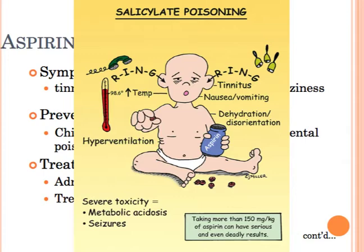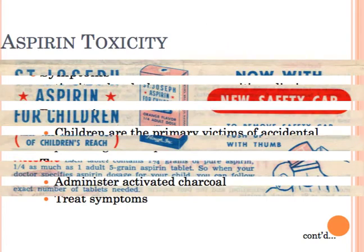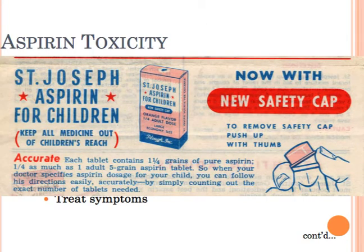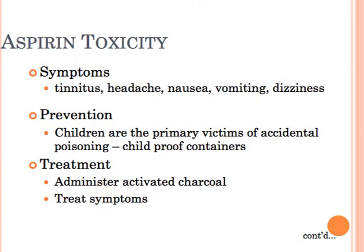Children are actually the primary victims of accidental poisoning. Education of parents regarding potential poisoning and proper storage using childproof containers has reduced accidental poisoning in children. Treatment of aspirin poisoning includes getting rid of the drug in the stomach by inducing vomiting or administering activated charcoal, and then other symptoms are treated symptomatically.